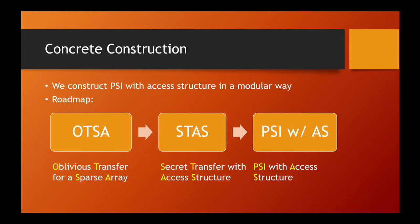We show how to construct PSI with access structure in a modular way. To this end, we study two intermediate protocols as basic building blocks. The first is called Oblivious Transfer for a Sparse Array, or OTSA, and the second is called Secret Transfer with Access Structure, or STAS.